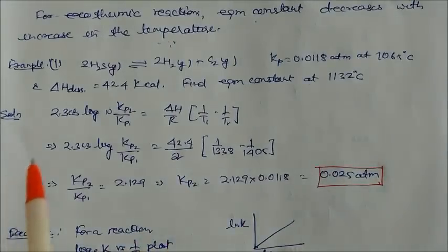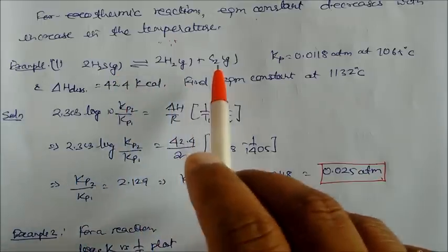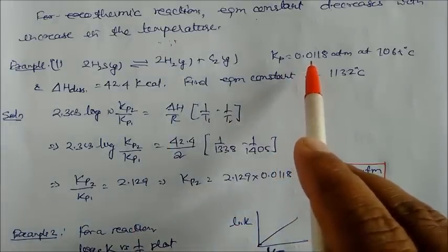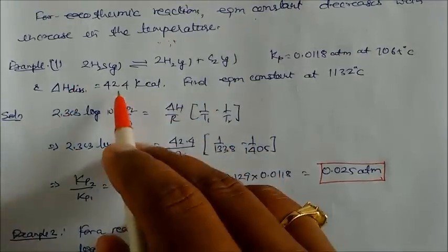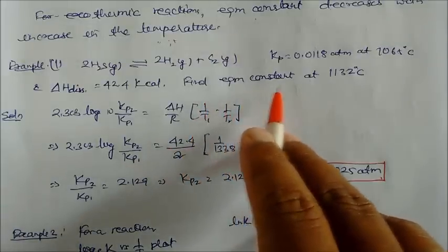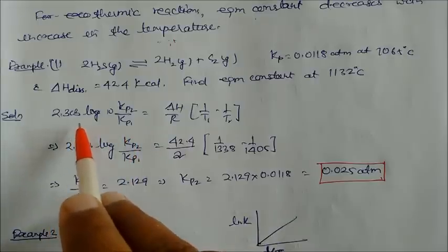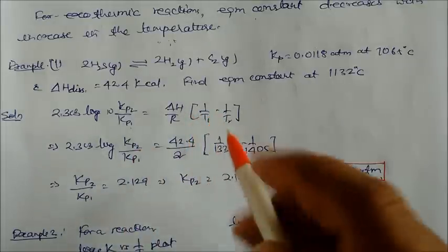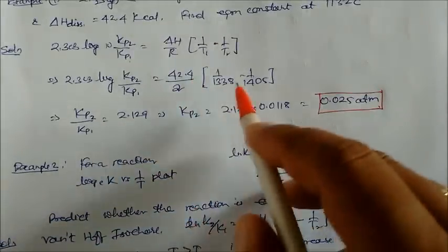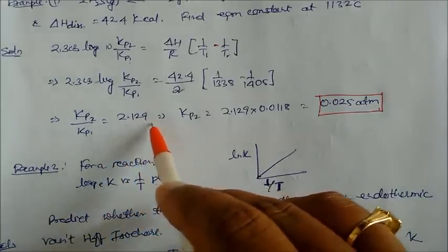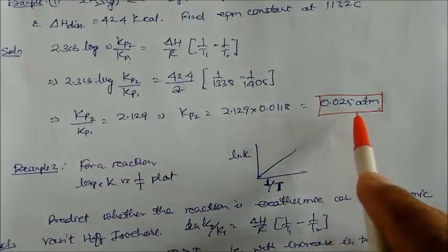Example one: H2S gas undergoes reversible dissociation into H2 plus sulfur. Kp = 0.0118 atm at 1065°C, and the heat of dissociation is 42.4 kcal. Find the equilibrium constant at 1132°C using the Van't Hoff isotherm equation: 2.303 log(Kp2/Kp1) = ΔH/R × (1/T1 − 1/T2). Substituting values with R = 2 cal/mol·K gives Kp2/Kp1 = 2.129, and since Kp1 = 0.0118, Kp2 = 0.025 atm.